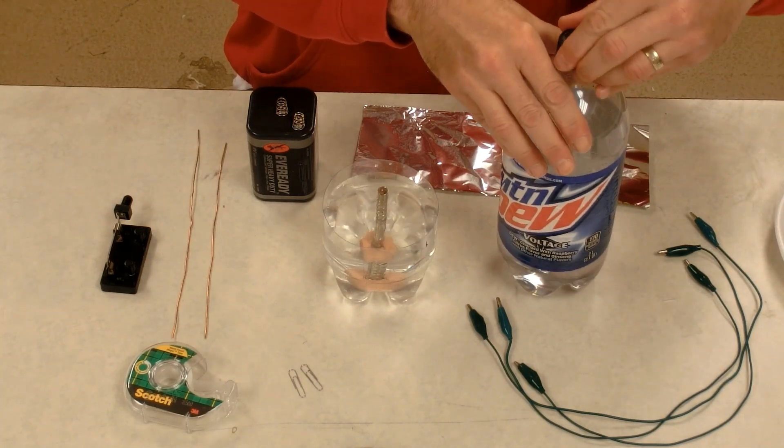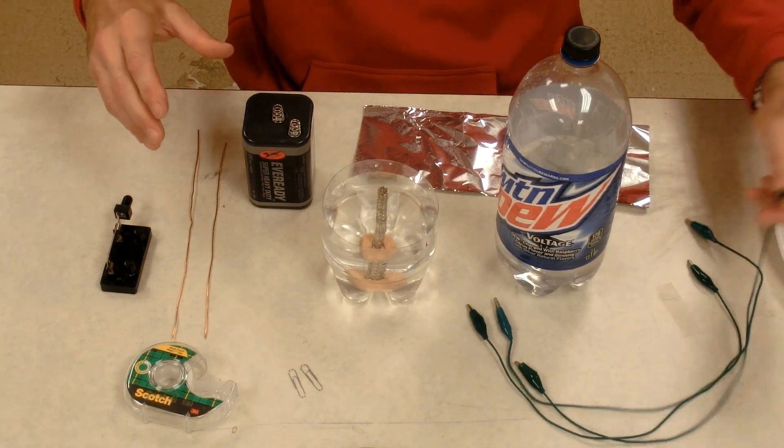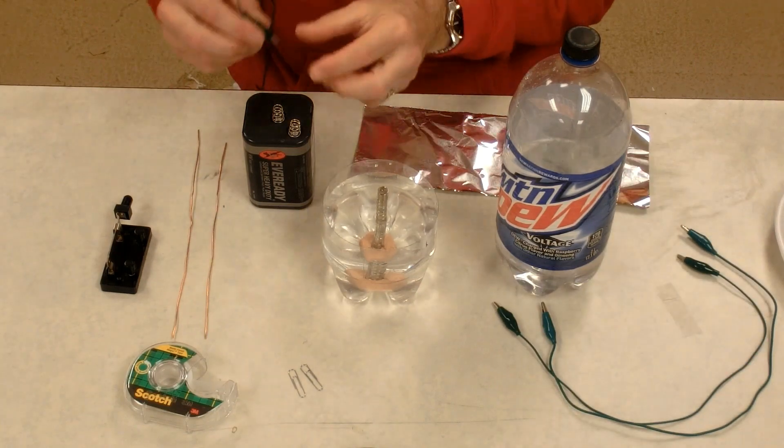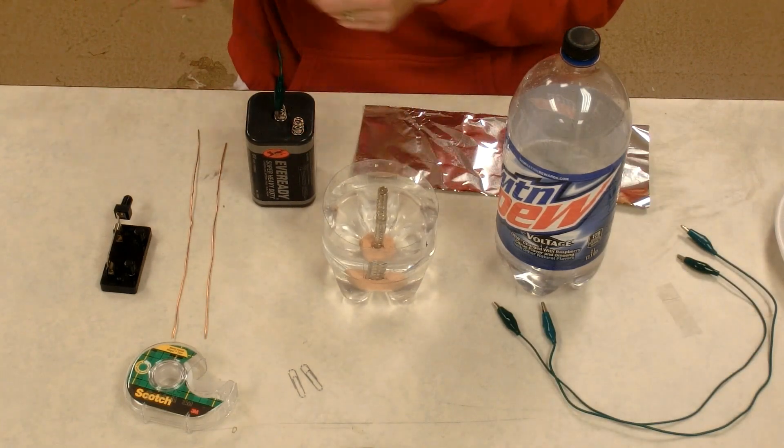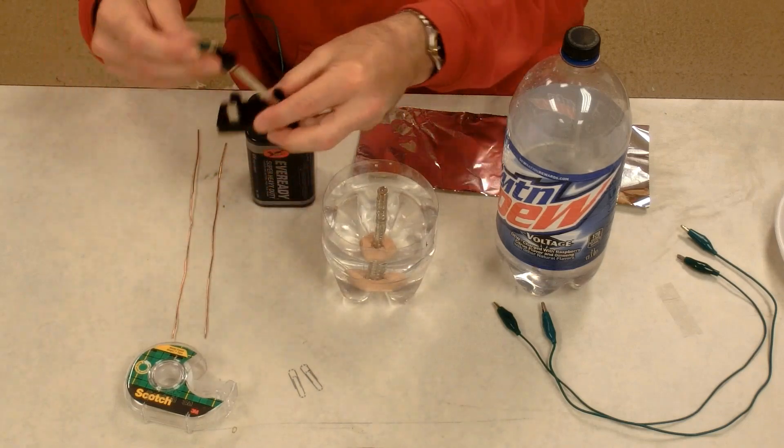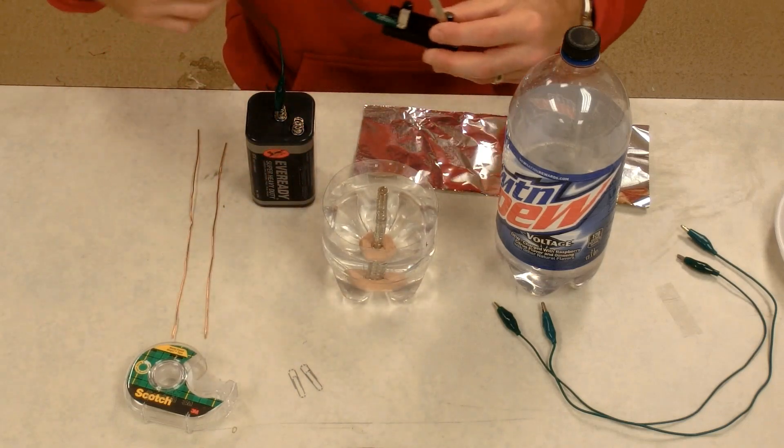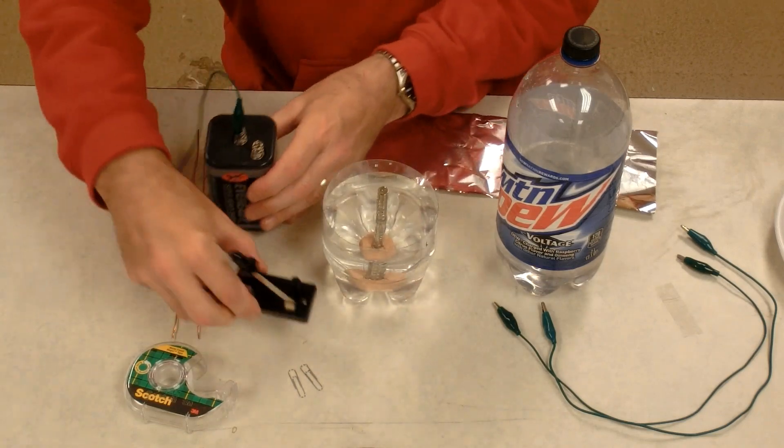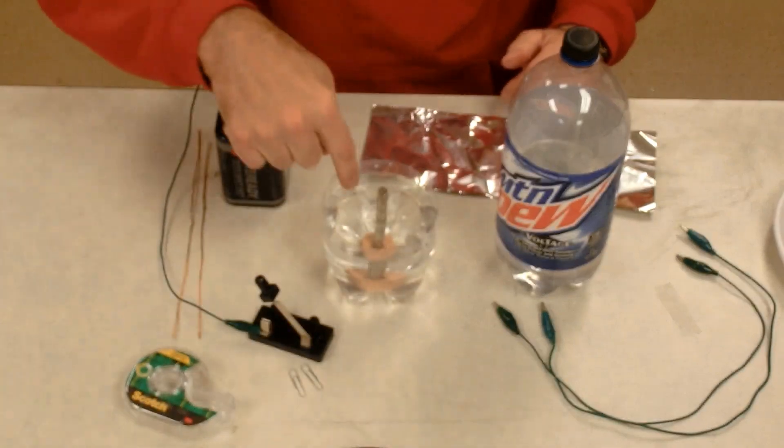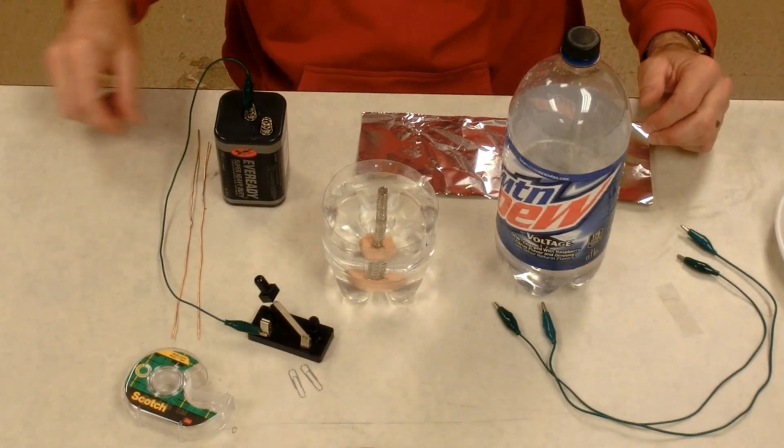What Faraday did was he took his voltaic pile and ran current from the voltaic pile. We can go to a switch, then we have to go into our tub of salt water.